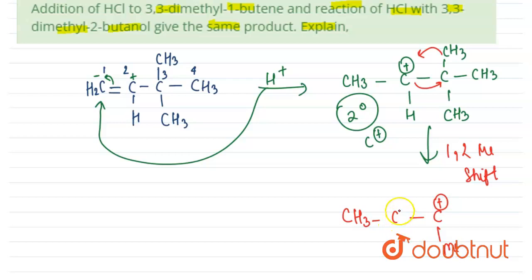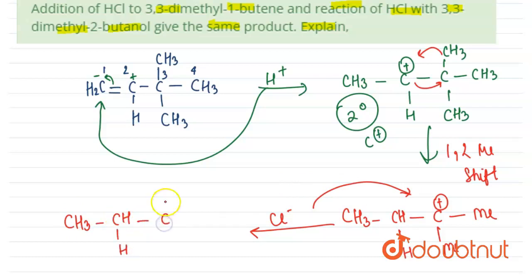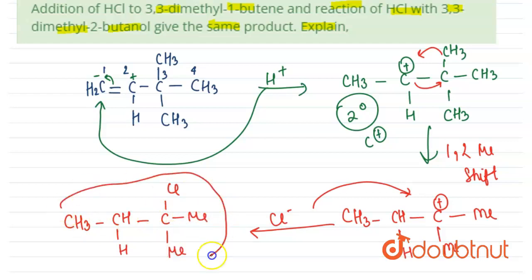It is a three degree carbocation, which is more stable. In the next step, chloride will attack this three degree carbocation to give us the final product: Cl attached with methyl and methyl groups. So this is our product in the first case.